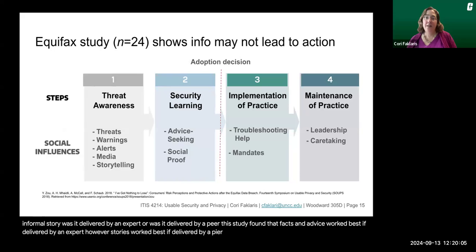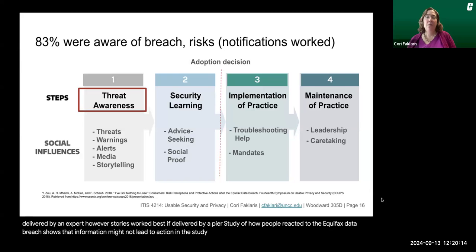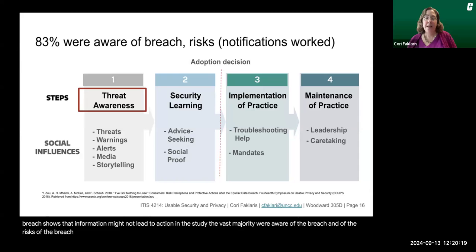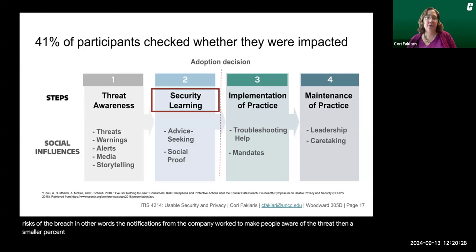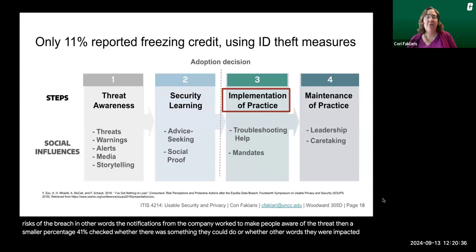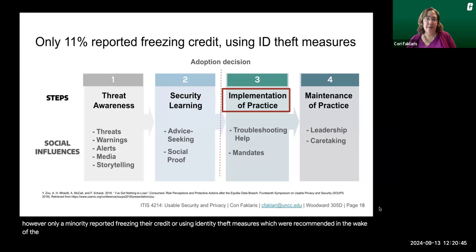A study of how people reacted to the Equifax data breach shows that information might not lead to action. The vast majority were aware of the breach and of the risks — the company's notifications worked to make people aware. A smaller percentage — 41% — checked whether they were impacted. However, only a minority reported freezing their credit or using identity theft protection measures, which were recommended in the wake of this severe data breach.